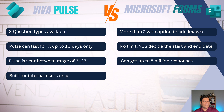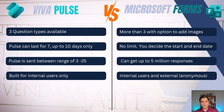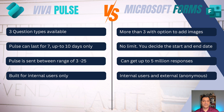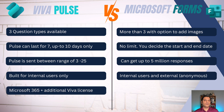Viva Pulse is built primarily for internal users — that's a very important key difference. Microsoft Forms gives you both options: you can set it for internal company users or enable external anonymous access. This can actually help you make the decision about which tool to use based on your audience. If the audience is external, Viva Pulse is out of the picture — it has to be Microsoft Forms.